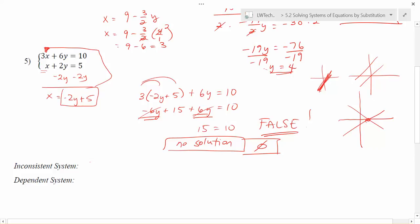If we have an inconsistent system, this is a system of equations with no solution. And this happens when your variables all drop out and you're left with something false.